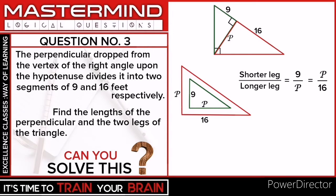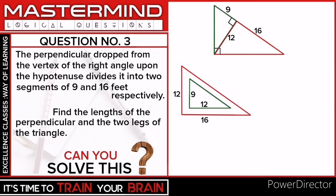By cross multiplication we get p squared equals 9 times 16, which equals 144. This means p equals the positive square root of 144, that is 12. So we have solved the first part of this problem: the perpendicular has a length of 12. Now we have to find the lengths of the two legs of the triangle.